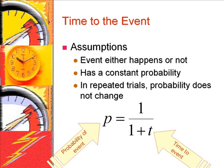If we assume that an event has a Bernoulli distribution — i.e., the event either happens or does not happen, it has a constant probability of occurrence, and the probability of the event does not depend on prior occurrences — then the number of consecutive occurrences of the event has a geometric distribution.